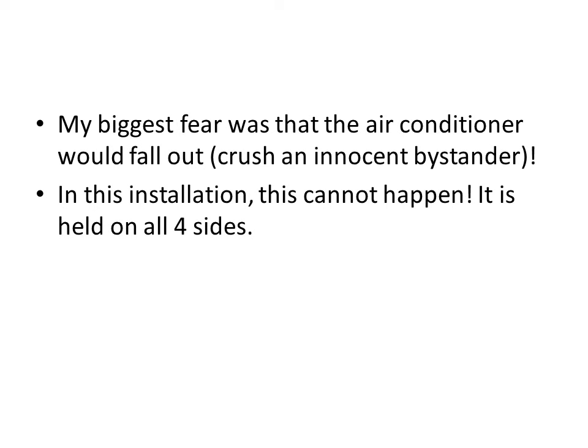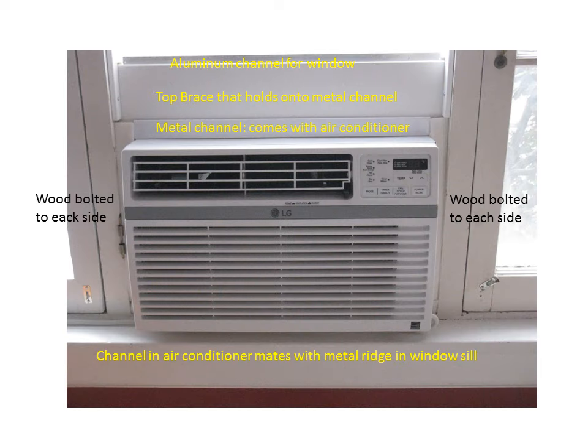My biggest fear was that the air conditioner would fall out and land on the front lawn or crush somebody, but this installation is so robust that cannot possibly happen. The air conditioner is securely held on all four sides. On the bottom there is a channel in the air conditioner that mates with a metal ridge in the window. On the sides, I bolted a piece of wood on each side of the air conditioner which mates up with wood bolted on the inside of the window frame. On the top there is a metal channel that comes from the factory, and I have a brace that goes into that channel, holding it up against the window frame.